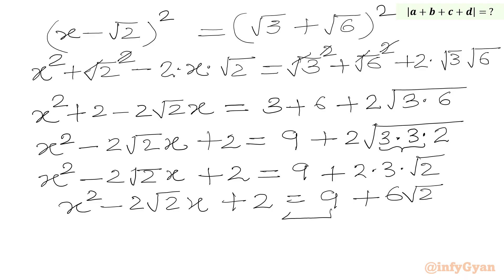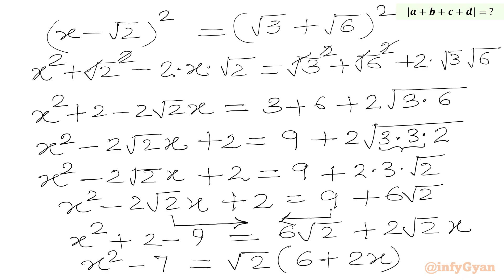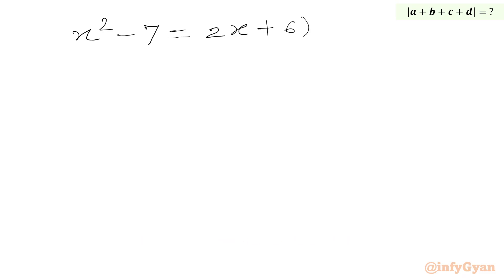Now we will take 9 to the LHS and move the minus 2 root 2 x term to the RHS. So we get x squared plus 2 minus 9 on the left, and 6 root 2 plus 2 root 2 x on the right. This gives x squared minus 7 equals root 2 times (2x plus 6), taking root 2 as common from the right hand side.